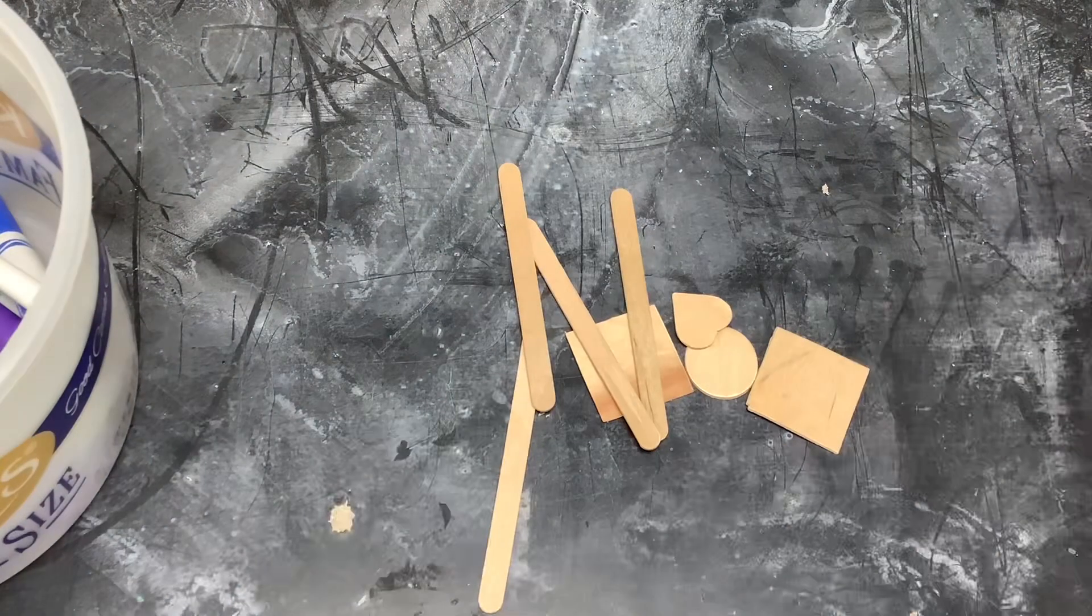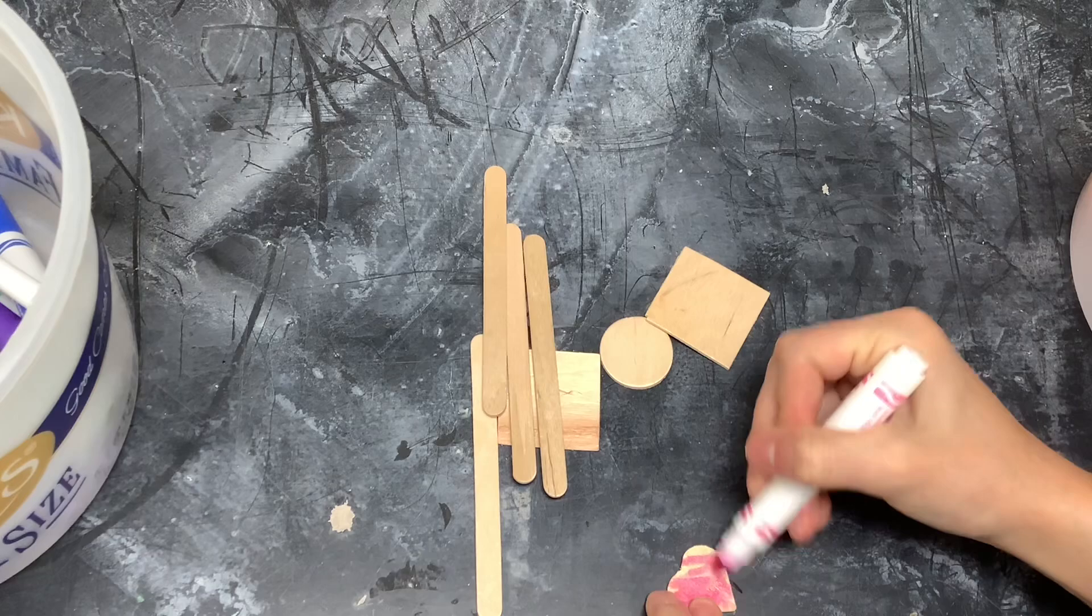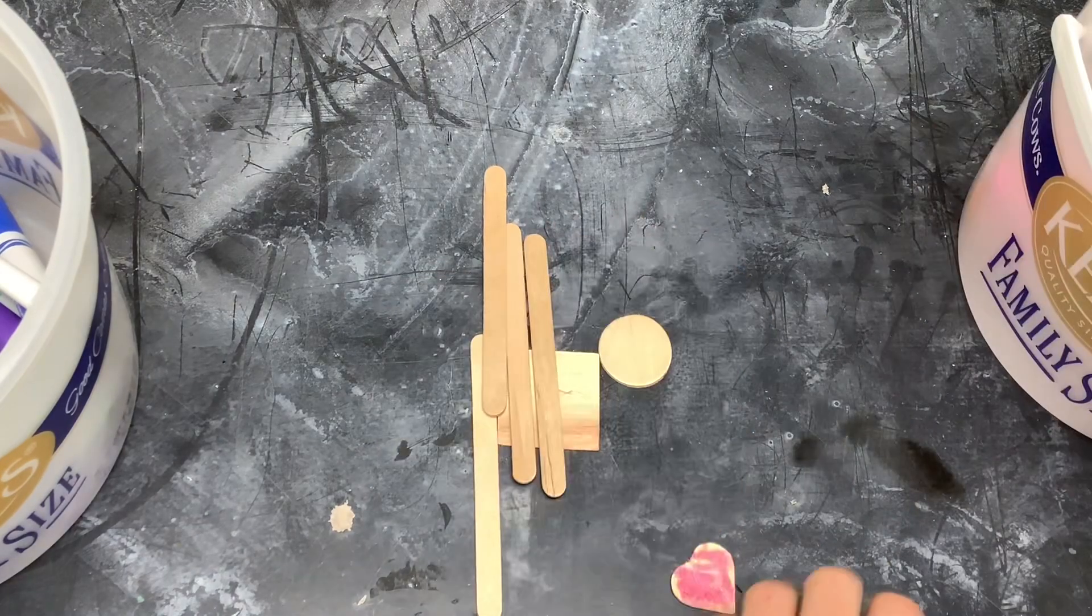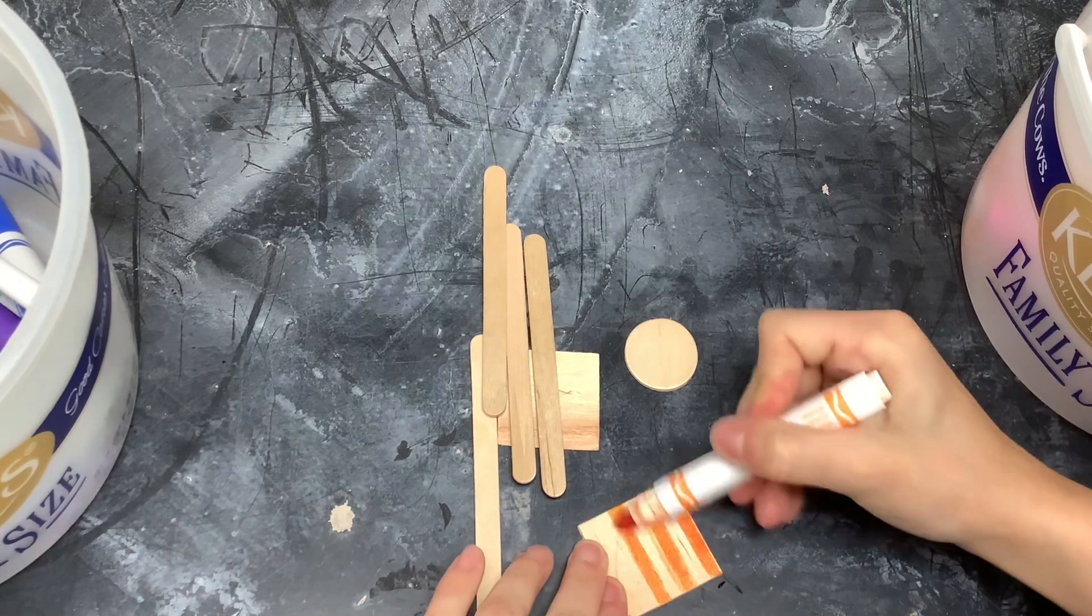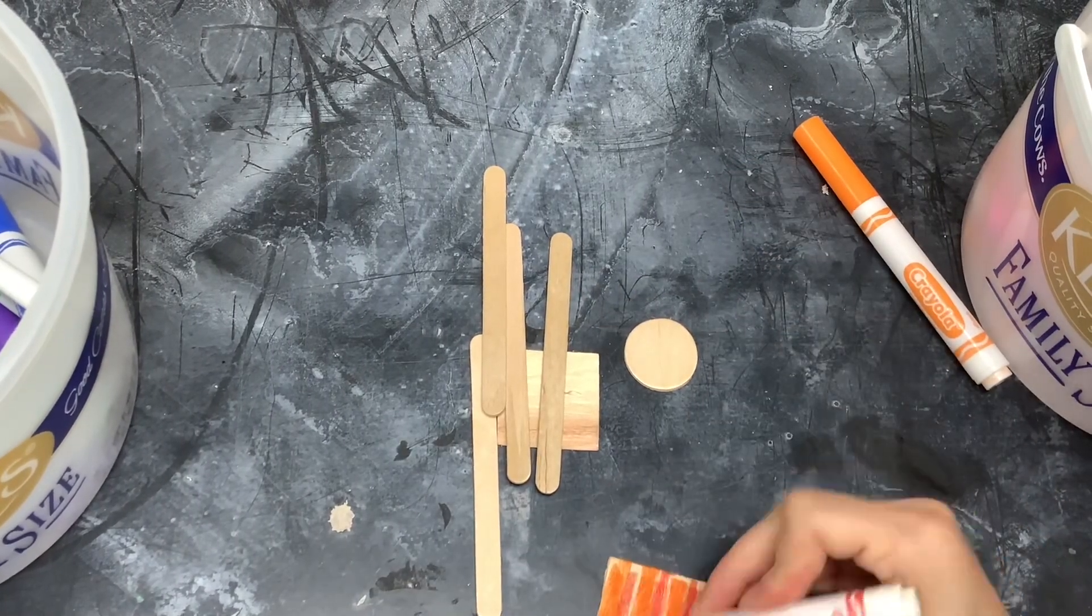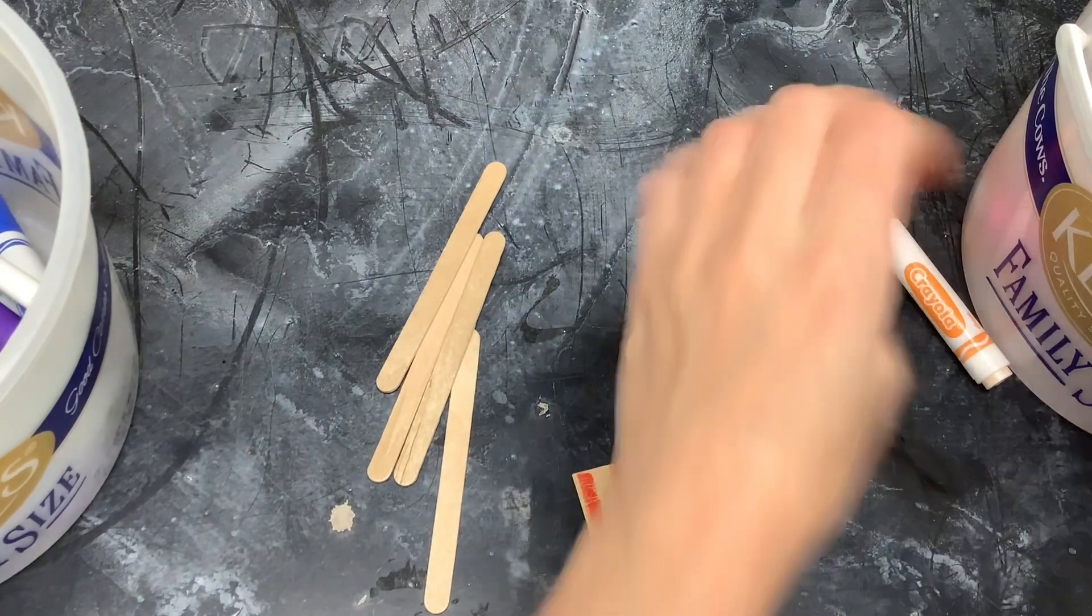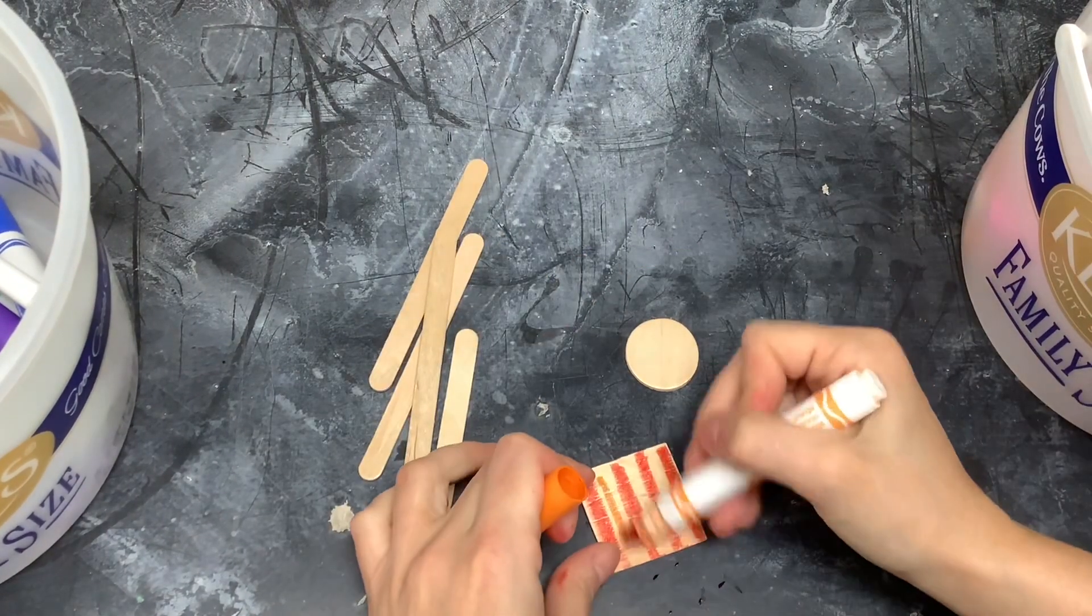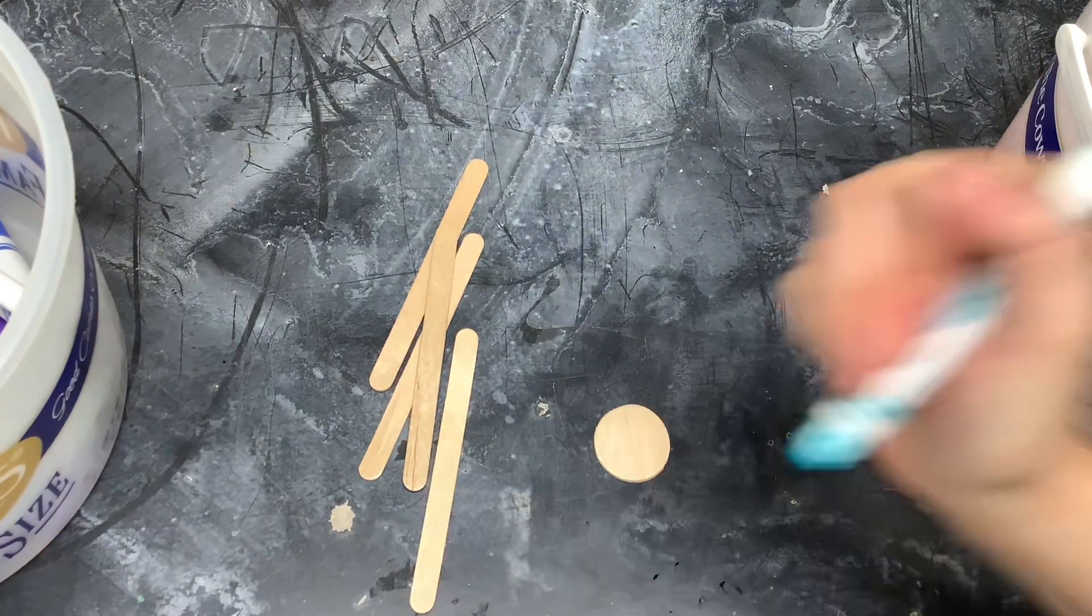Now, we can use some of these wooden popsicle sticks and shapes, and color some of them in with a marker. You can color these whatever color you want. All of them don't need to be colored, but you can color in the shapes that you would like. Make sure to snap that cap on the marker when you're done with it.